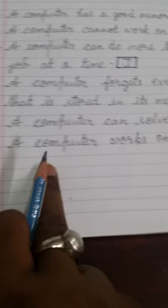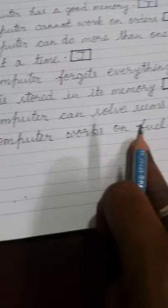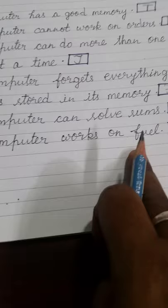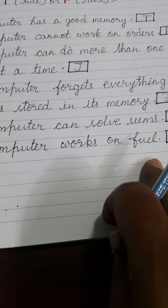Six: A computer works on fuel. Computer fuel pe kaam karta hai. Fuel means kya hai, indhan, jo koila aur lakadi ka hota hai. But computer ko kya chahiye, electricity chahiye. It runs on electricity. So this is false.